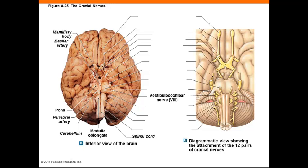The vestibulocochlear nerves, number 8, respond to sensory receptors in the inner ear. The nuclei are in the pons and medulla oblongata, and there are two components as its name suggests. The vestibular nerve conveys information about balance and position, and the cochlear nerve responds to sound waves for the sense of hearing.